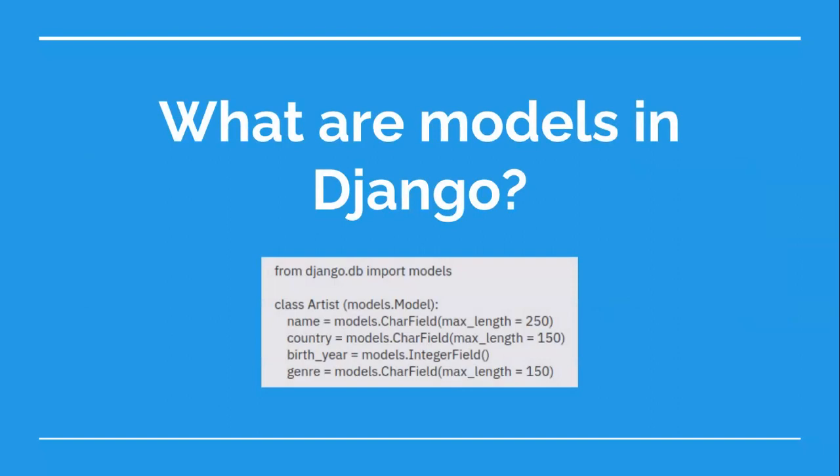Now we will create the artist model. Models should be defined inside an app folder in a file named models.py. You cannot create models in the main app — the main app does not even have a models.py file. But there is a models.py file inside the song app that we created. So open the models.py file of the song app in the editor and add these lines to the file.